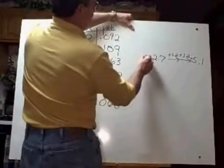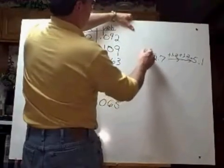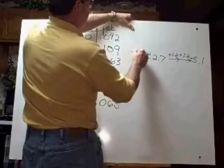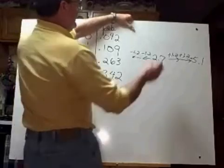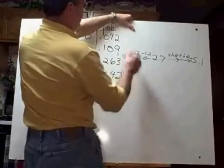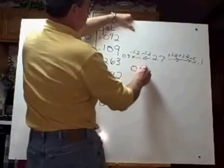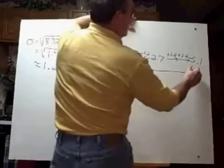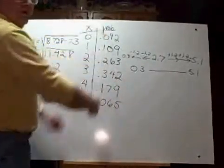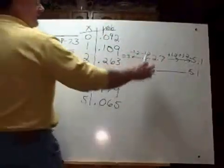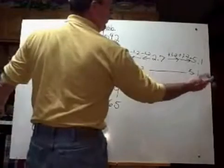Two standard deviations to the left, we're going to be subtracting 1.2, subtracting another 1.2. And that takes us down to about 0.3. So my range of normal, usual values we would expect from this specific probability distribution is a range from 0.3 to 5.1.